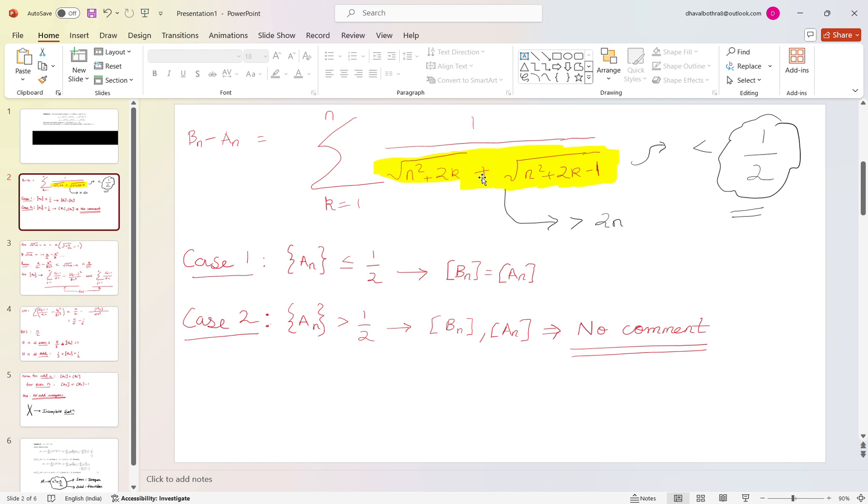Now this is often done in class 12th limits equations, that often when we need to calculate the limit then we rationalize and bring terms in addition. So now the terms are in addition, we can say that the addition of both the terms will be less than 2n, hence the difference between them will be less than half.